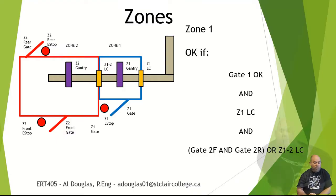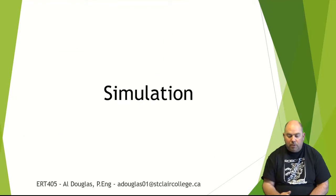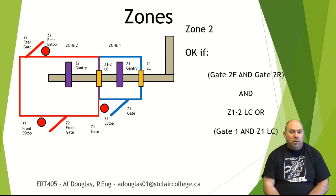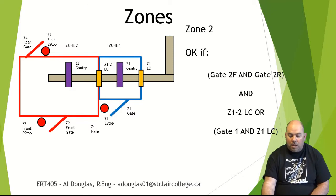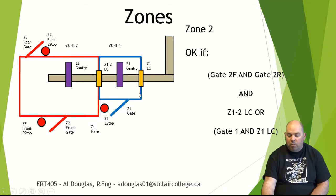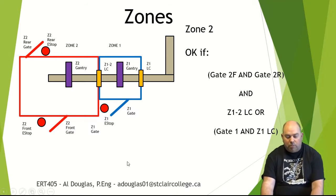Zone two works very similarly, just in the other direction. For zone two to be okay, I need both the rear gate and the front gate closed, and I need the light curtain between the two zones to be okay. Or, if that light curtain is broken, I need the rest of the zone one perimeter to be intact — because that would join the two fences together. So either this light curtain is good, or this light curtain and this gate are both good.